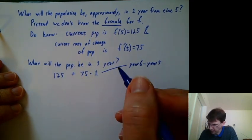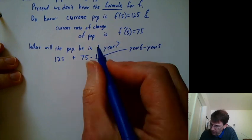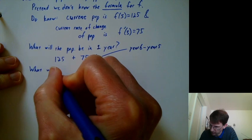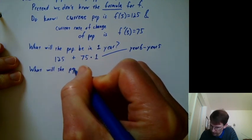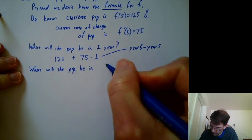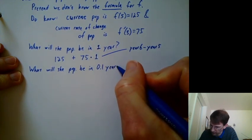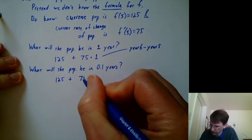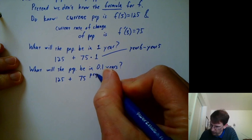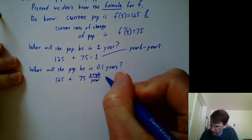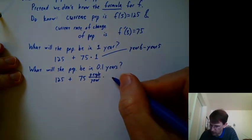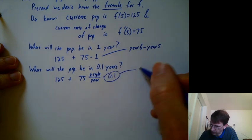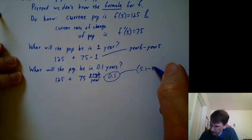So the arithmetic is easy. That's not the point here. Another question is, what will the population be in one-tenth of a year? So in 0.1 years from time 5, well, we'd say we're starting with 125 people. We're growing at 75 people per year. Every now and then it's good to include your units. And how many years are we going into the future here? 0.1. And that 0.1 is time 5.1 minus time 5.